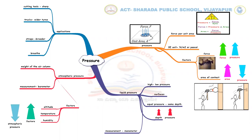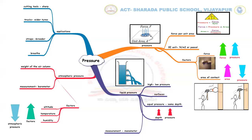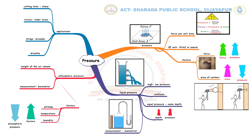The next branch deals with liquid pressure. The pressure exerted by liquids is called liquid pressure. Liquids move from a region of high pressure to a region of low pressure. Liquids exert pressure on all surfaces that they touch, and equal pressure at the same depth. The pressure exerted by a liquid increases with depth. Liquid pressure is measured by an instrument called a manometer.